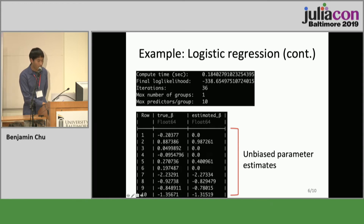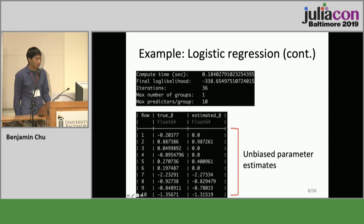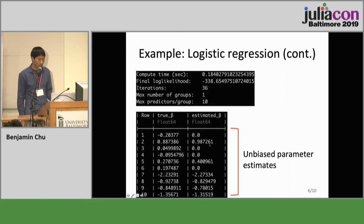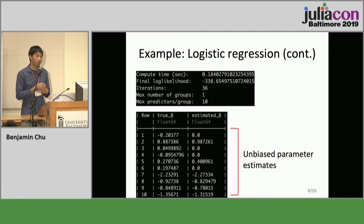On a 1,000 by 10,000 matrix, this shows the runtime and iteration numbers. The code is reproducible online on GitHub, and the talk is as well. If you run this many times — maybe a thousand times — you will see that the parameter estimates from IHT are unbiased once you find the correct variables, and that is essentially why it's better than lasso.